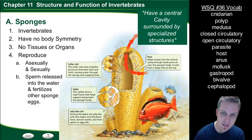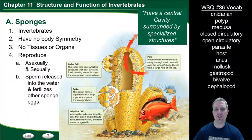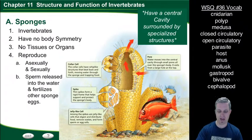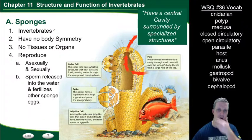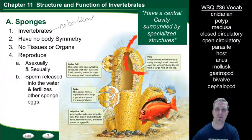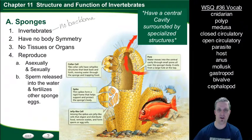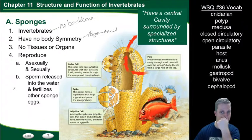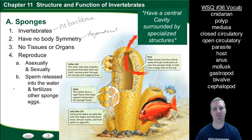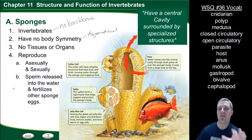The first group we're going to talk about are sponges. Sponges are invertebrates — organisms that do not have a backbone. Of the 1.5 million invertebrate species, sponges have no body symmetry, meaning they're asymmetrical. They have no tissues or organs, so there's no large division of labor. They just have cells with specific functions within the sponge.